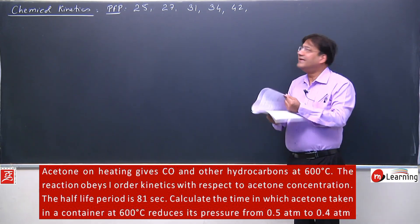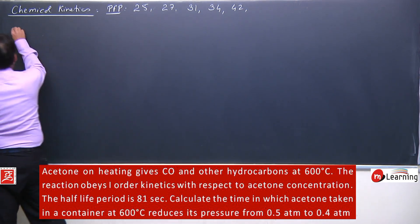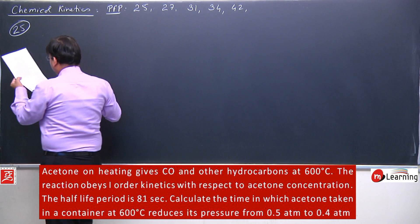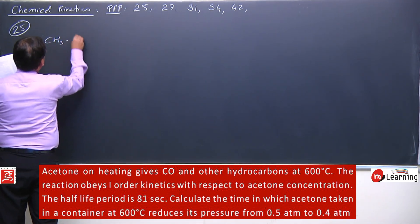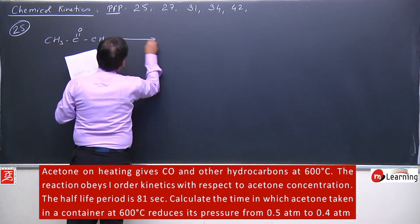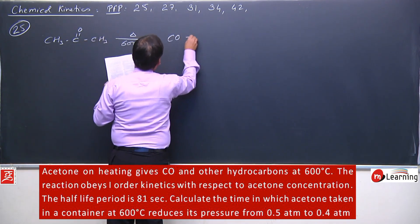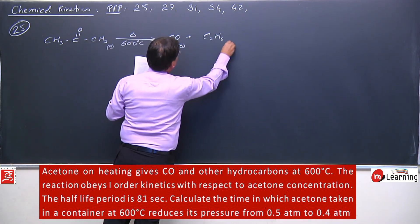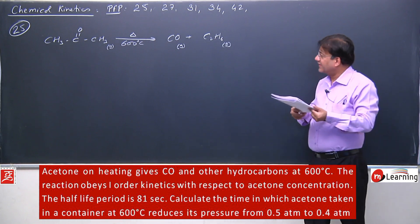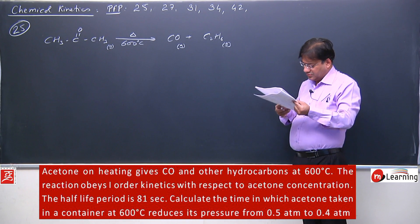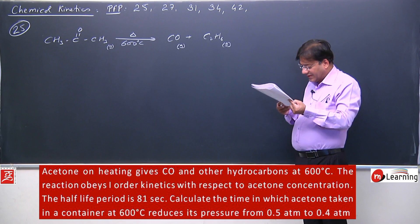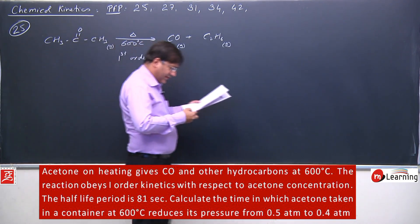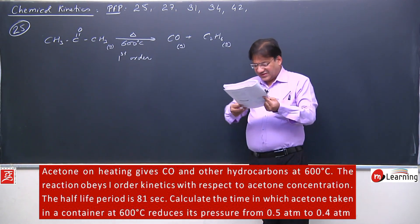Let us start reading the 25th problem. Acetone on heating gives carbon monoxide and other hydrocarbon at 600 degrees centigrade. Acetone (CH3-CO-CH3) on heating gives carbon monoxide and methane. The reaction is: acetone (gas) gives carbon monoxide and ethane. The reaction obeys first-order kinetics with respect to acetone concentration.